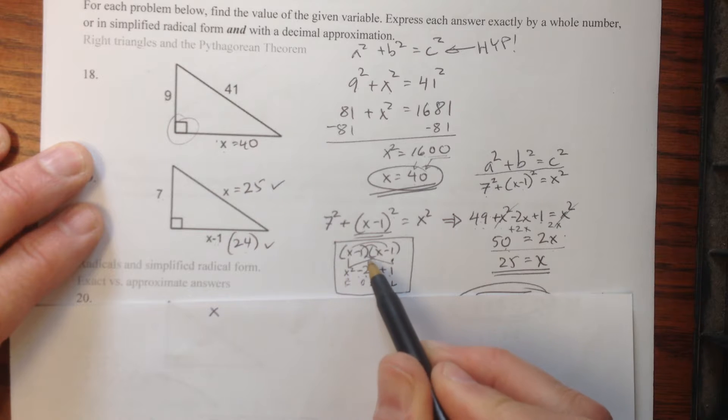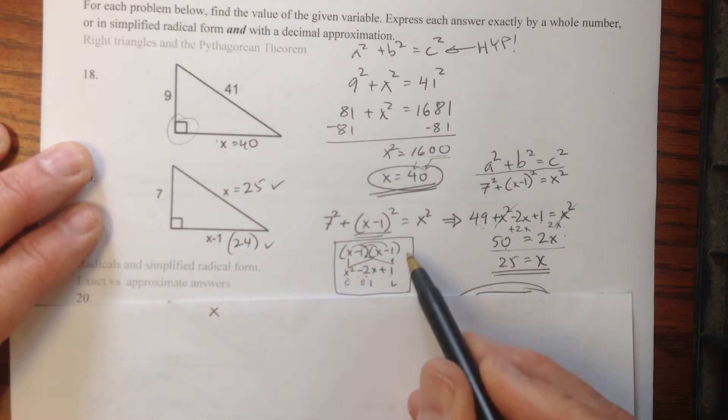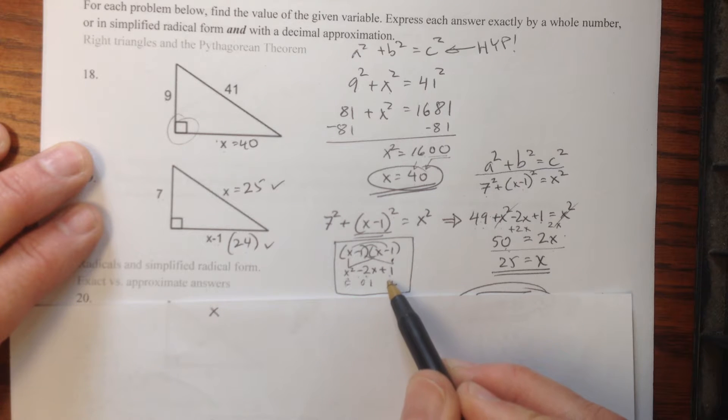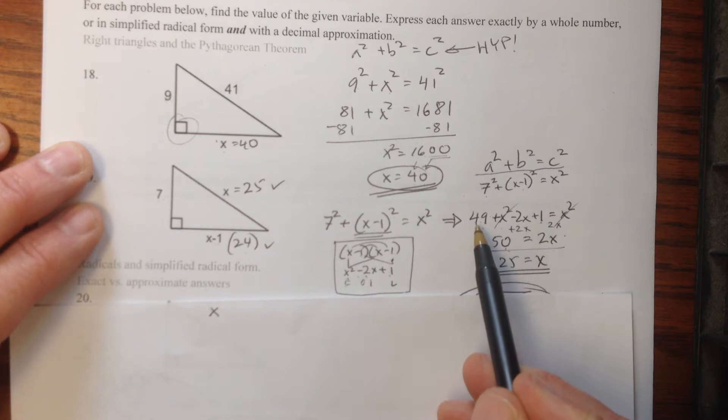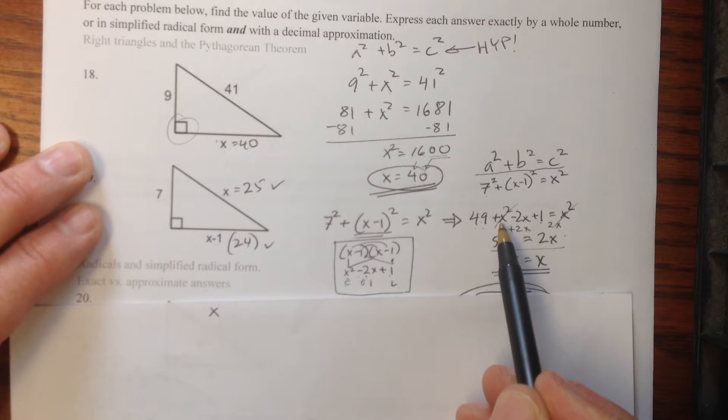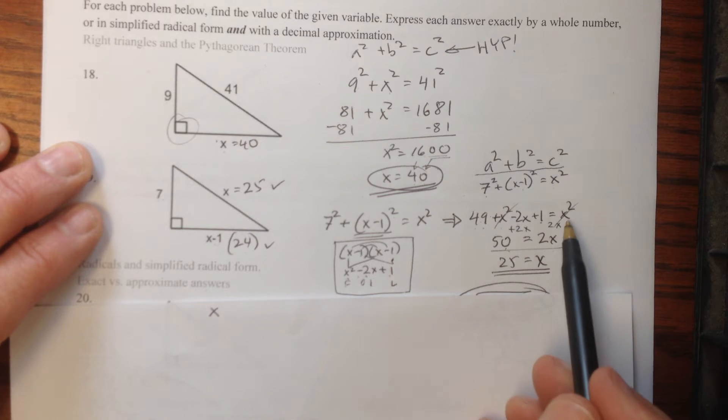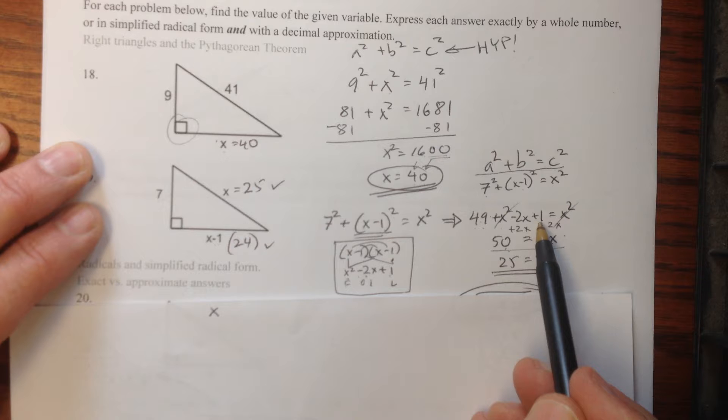You multiply the first terms, you get x squared. You multiply the inside and the outside terms, you get minus 2x. And then negative 1 times negative 1 is plus 1. So I get it over here that it's 49 plus, then when we foil it out we get x squared, which cancels with this x squared, and minus 2x plus 1.